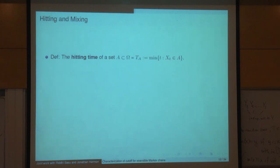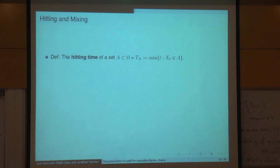This graph is actually a weighted expander — for any set, its weighted boundary is at least a constant times its volume. So the spectral gap turns out to be order one, but the mixing time is order N. The product condition holds, yet there is no cutoff.